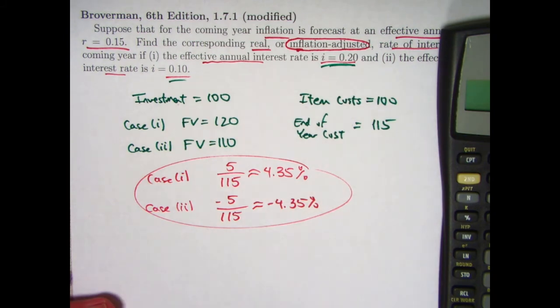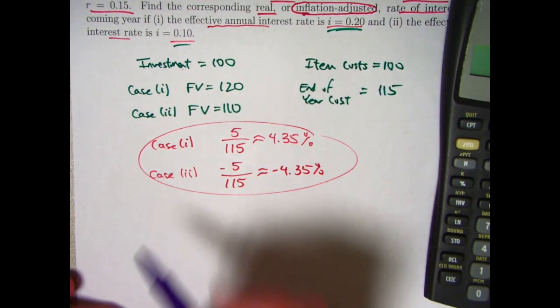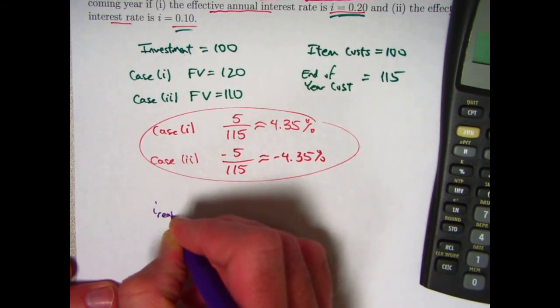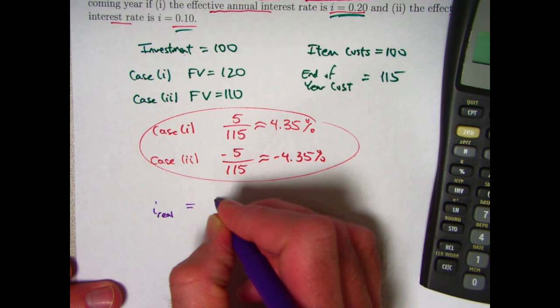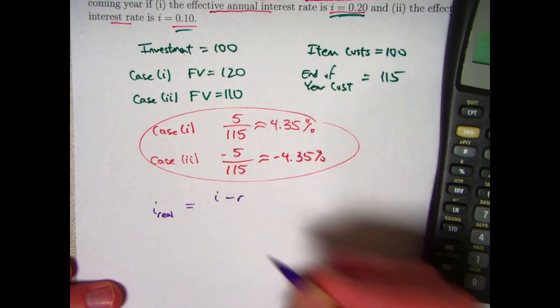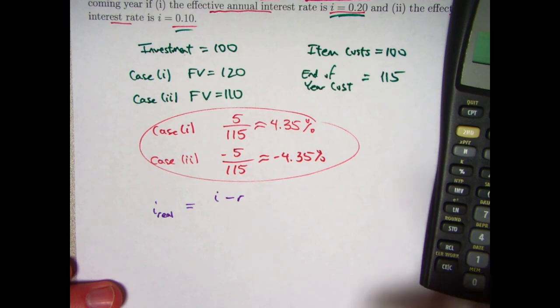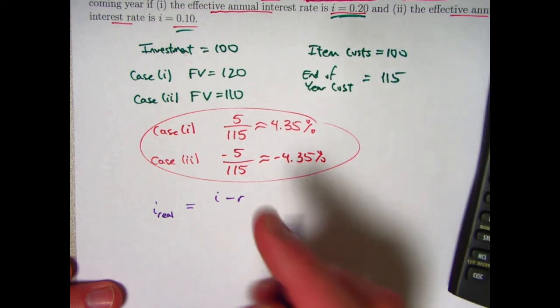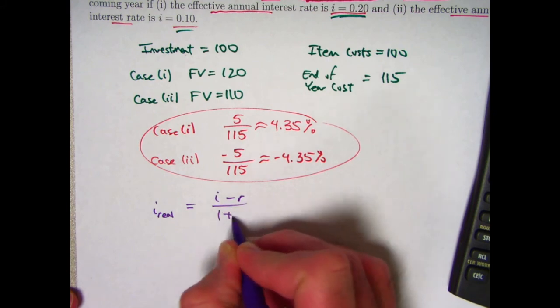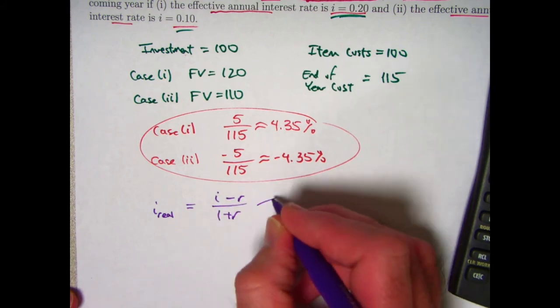There is, like I said, a formula for these things. It's written like this. I sub real is I, the nominal rate of interest for your investment, minus R, the effective annual rate of, excuse me, effective annual rate of inflation, divided by 1 plus R.